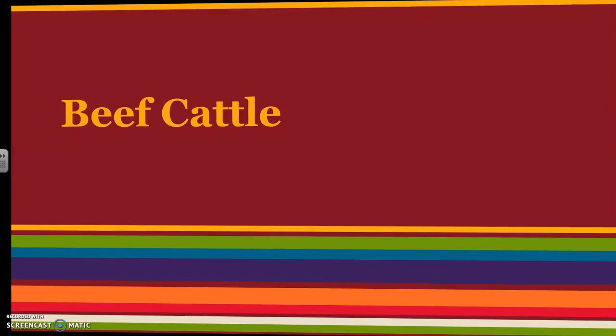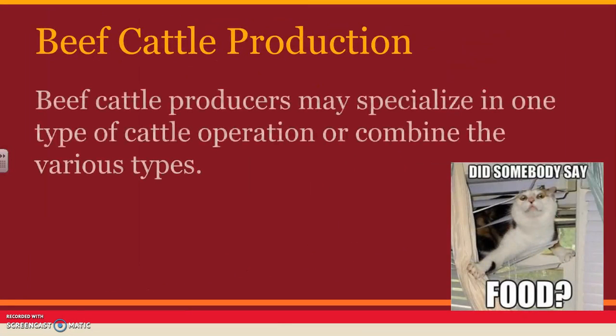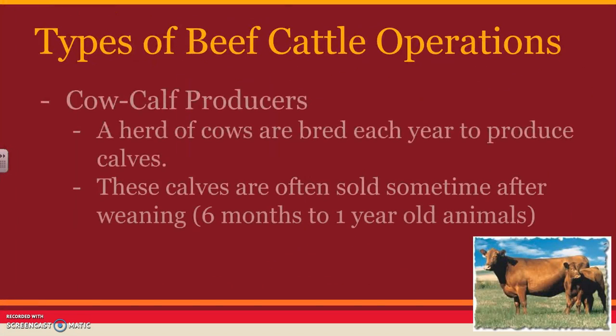Beef cattle producers can specialize in one type of cattle operation or they can combine the various types. The first type is a cow-calf producer, where they keep a herd of cows that are bred every year to produce calves. The calves are then sold sometime after weaning, which is typically six months to a year old.